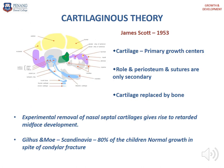In 1953, James Scott suggested the cartilaginous theory. Scott proposed that cartilage is the primary growth center and the role of periosteum and sutures is only secondary. The cartilage will later be replaced by bone. However, experimental removal of naso-septal cartilage gives rise to retarded mid-face development. A study by Gierhouse and Moe in Scandinavia showed that 80% of children have normal growth in spite of condylar fracture.